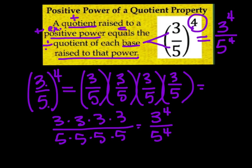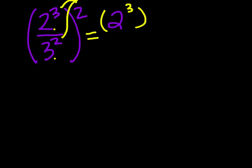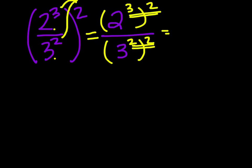Let's use this property to our advantage and solve a couple of problems. Our first problem: 2 to the third power divided by 3 to the second power, and that whole quotient is squared. We need to distribute that 2 into both base numbers. Using the power to a power property, we get 2 to the third squared over 3 squared to the second power, which gives us 2 to the sixth power over 3 to the fourth power. Final answer.